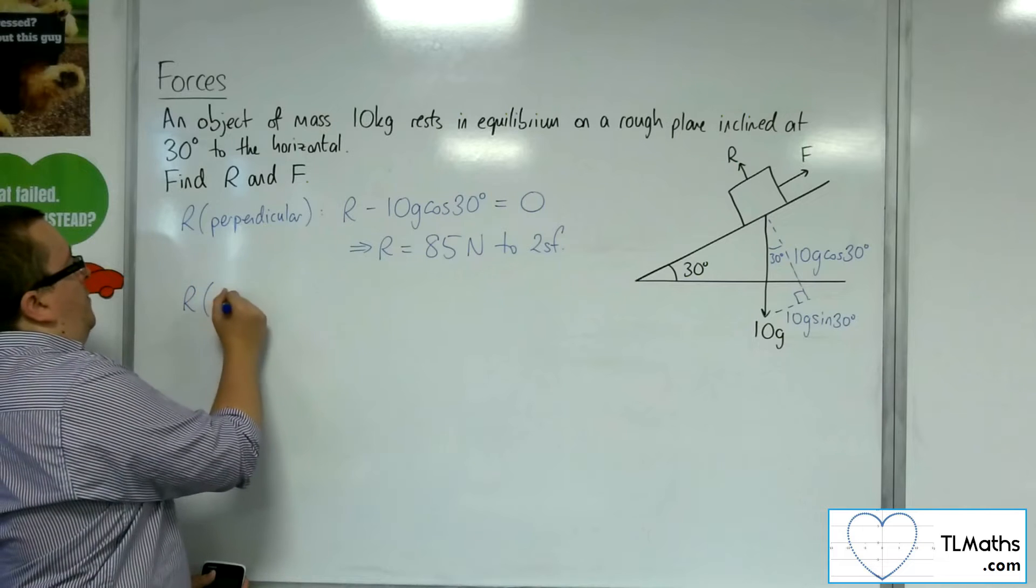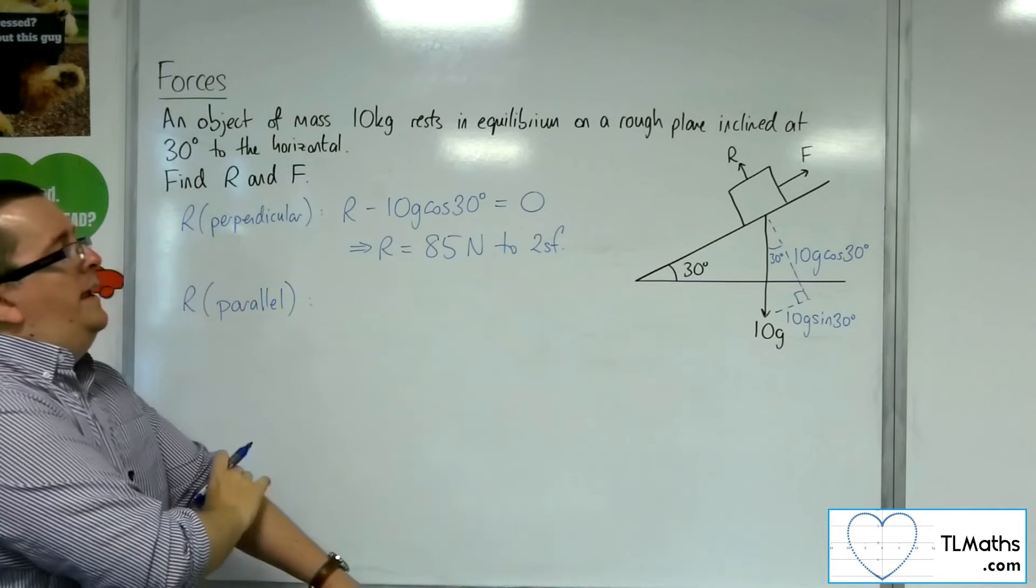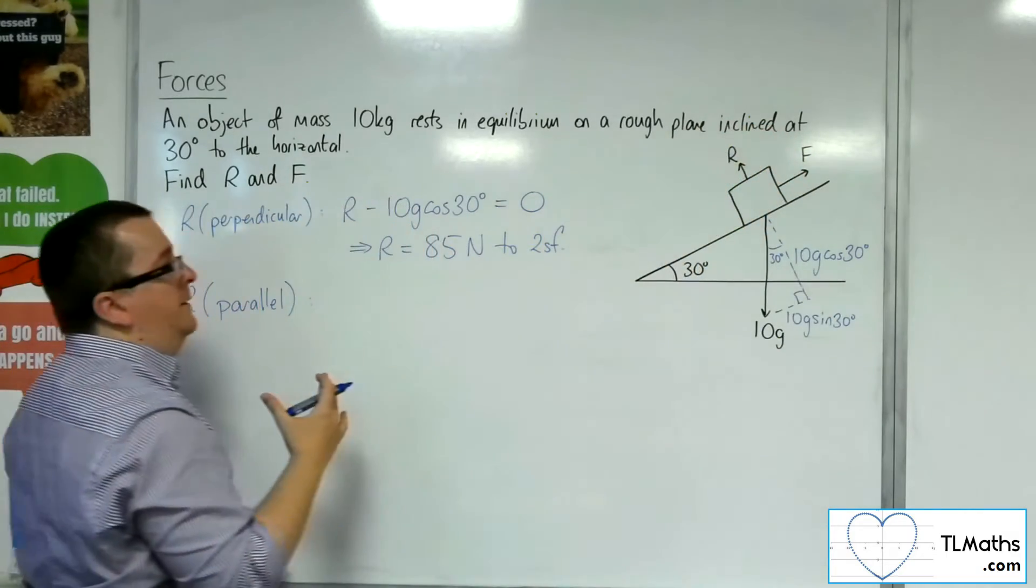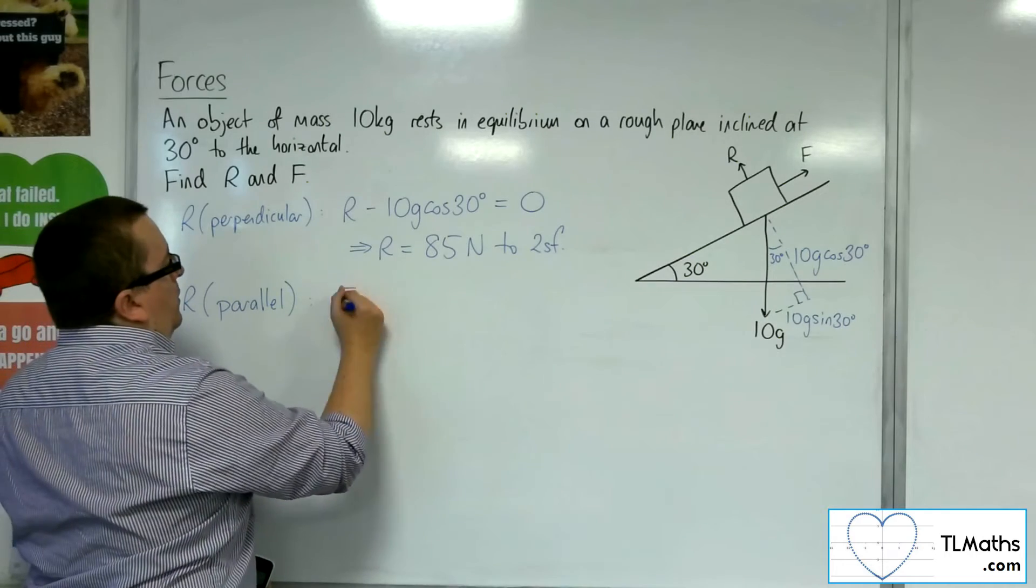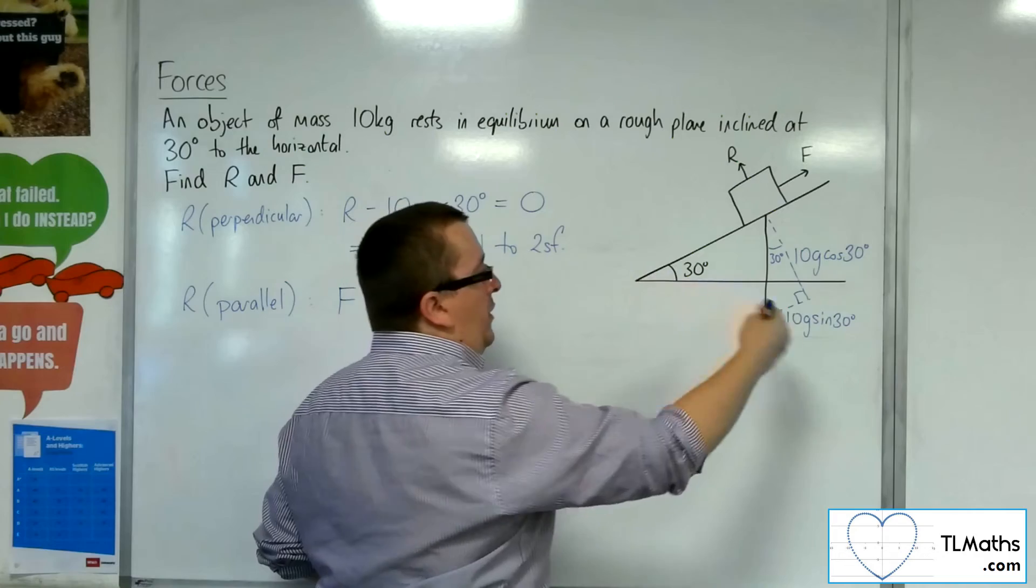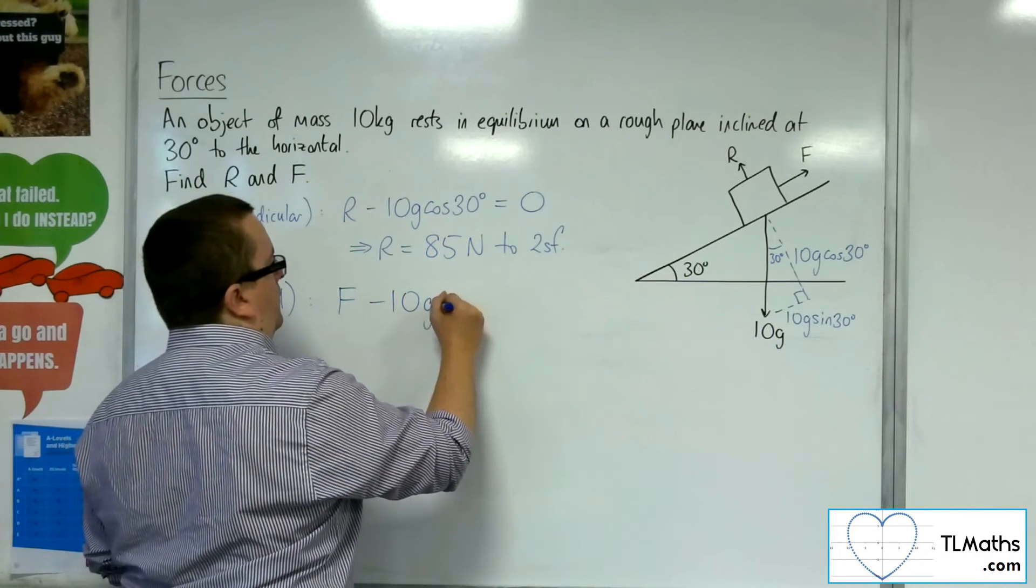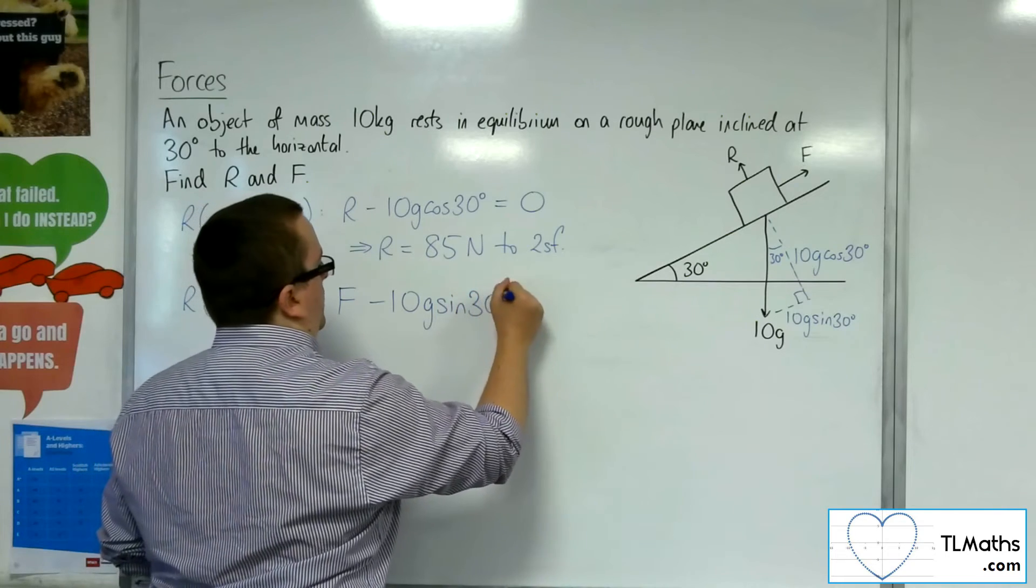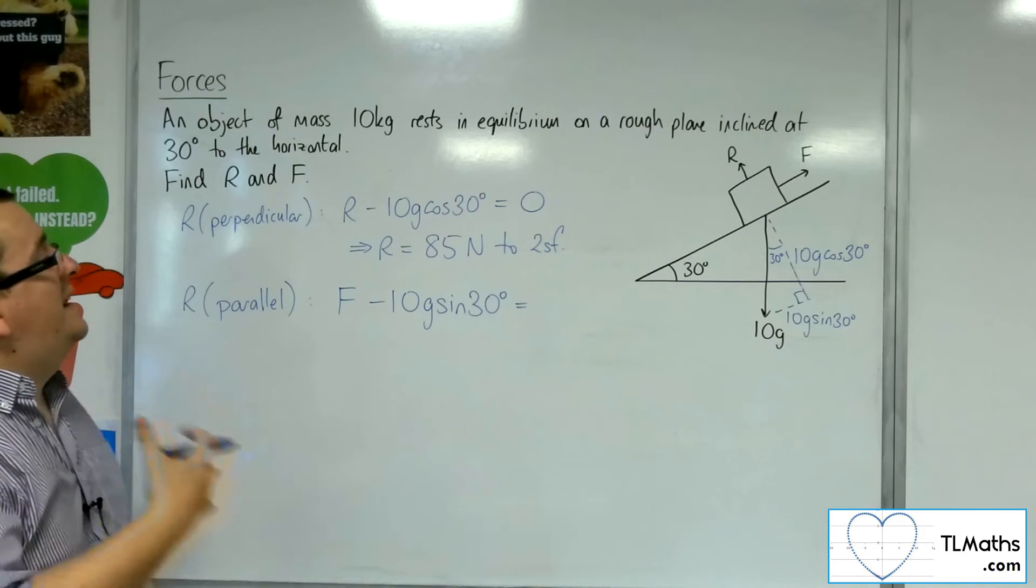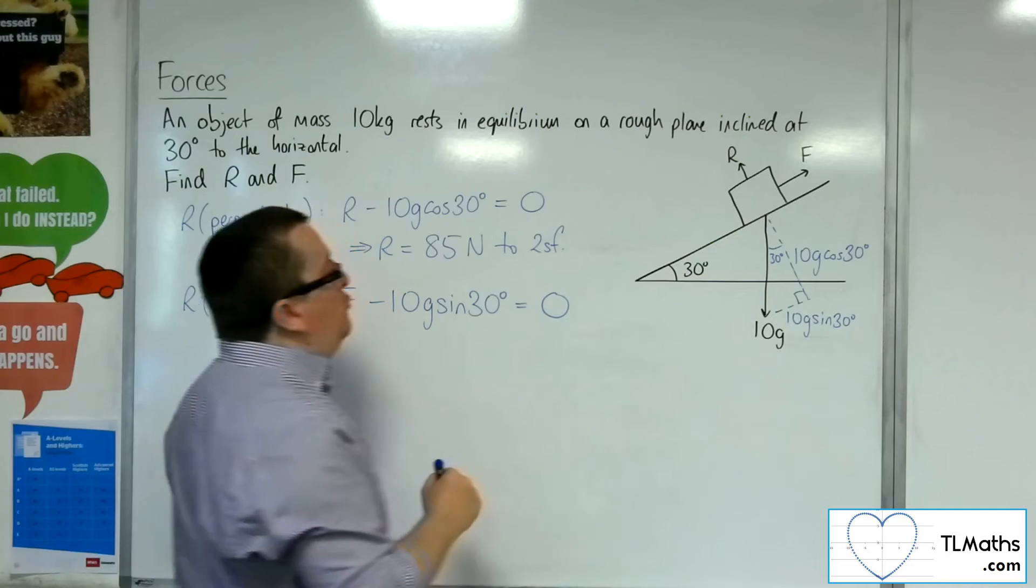Now, if I resolve parallel to the plane, if I take the friction, so if that is positive, going up the plane, I've got F take away the 10G sine 30, the component of the weight. And because the object is in equilibrium, there is no acceleration here, and so mass times acceleration is 0.